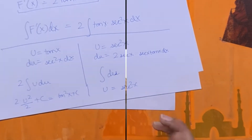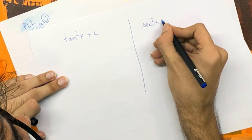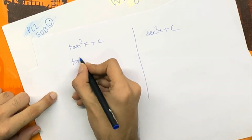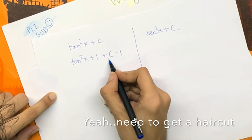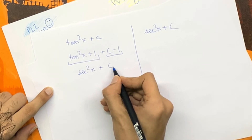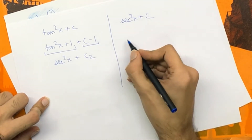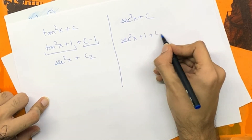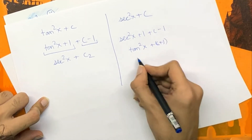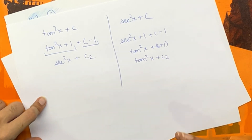So how does the constant of integration help? We have two answers: tan²x + C and sec²x + C. If we add +1 and −1 to the first answer, we get tan²x + 1 + (C − 1). Since tan²x + 1 = sec²x, and (C − 1) is just another constant, this becomes sec²x + C₂. Similarly, sec²x + 1 + C also works. So both answers are consistent once we account for the constant.